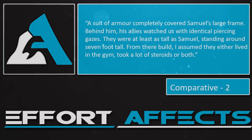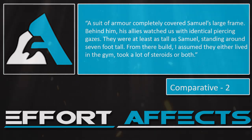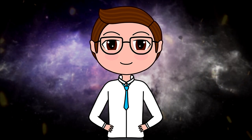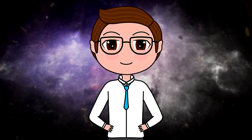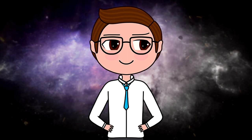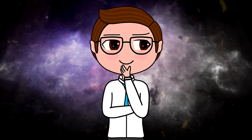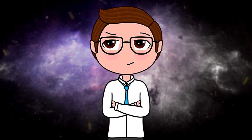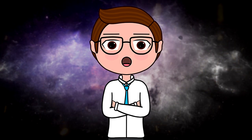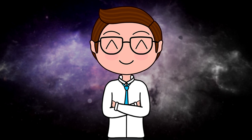A comparative method can also show similarities. Example: 'A suit of armor completely covered Samuel's large frame. Behind him his allies watched us with identical piercing gazes. They were at least as tall as Samuel, standing around seven foot tall. From their build I assumed they either lived in a gym, took a lot of steroids, or both.' This shows how large the entire group is and makes Samuel feel like more a part of them, showing his alliances — and it can even help humanize the group, or show after an action scene that the rest are just as strong as him, making them seem like more of a threat.